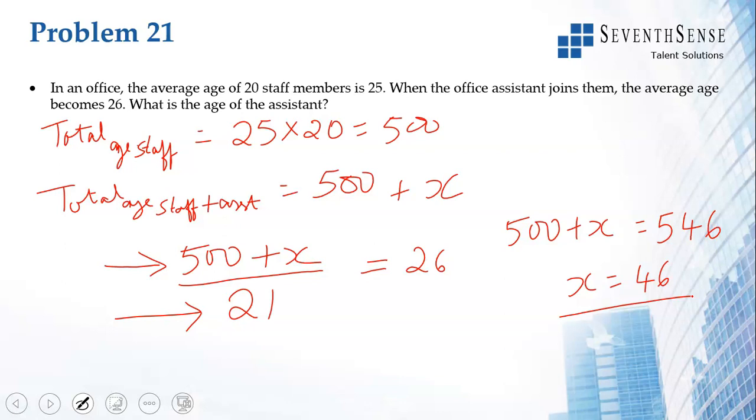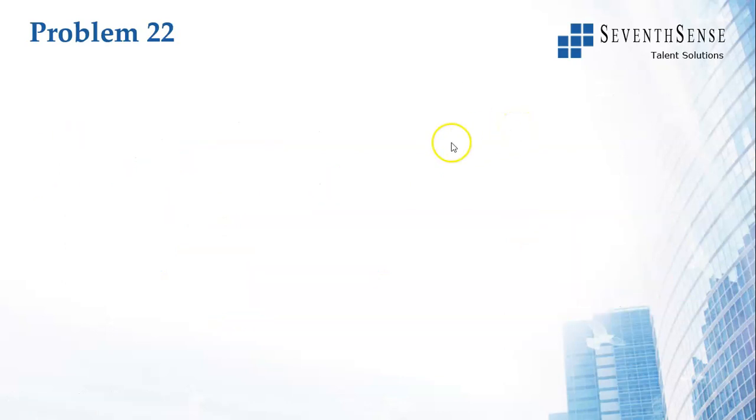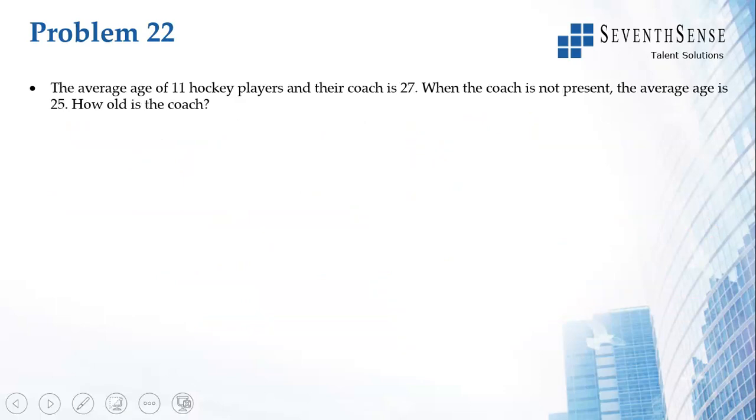Problem 22: The average age of 11 hockey players and their coach is 27. So what is their total? Total age of 12 people is 12 times 27, which is 11 hockey players plus the coach. This becomes 270 plus 54, which is 324.